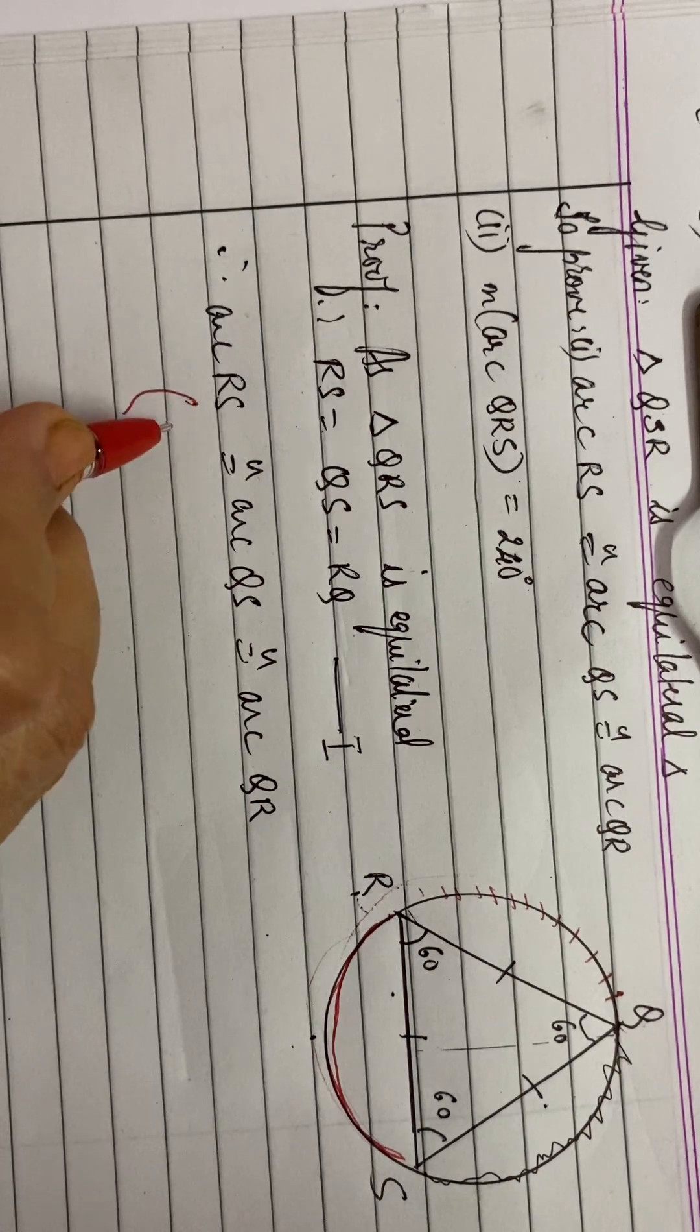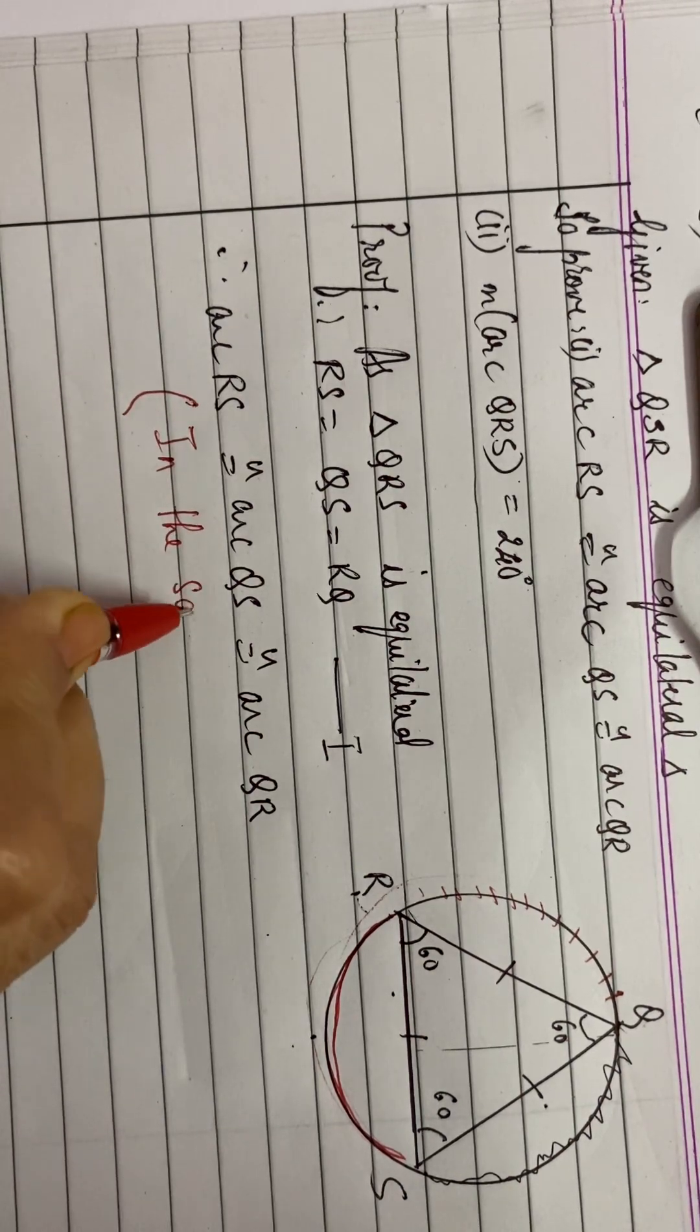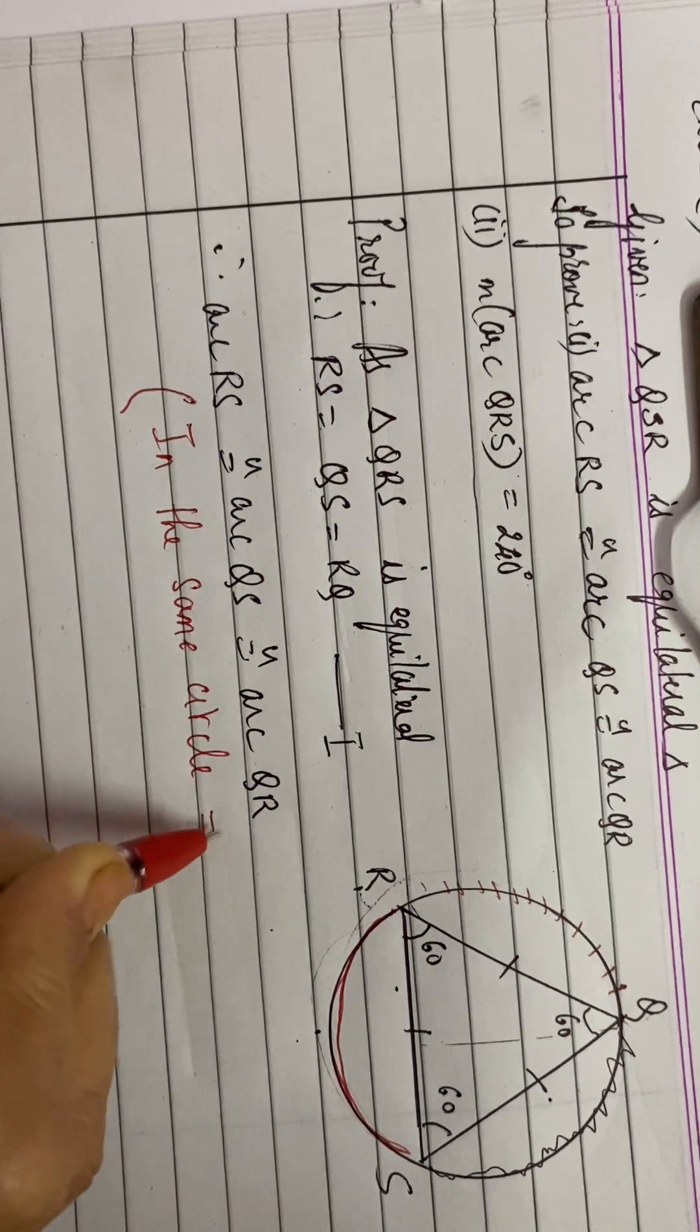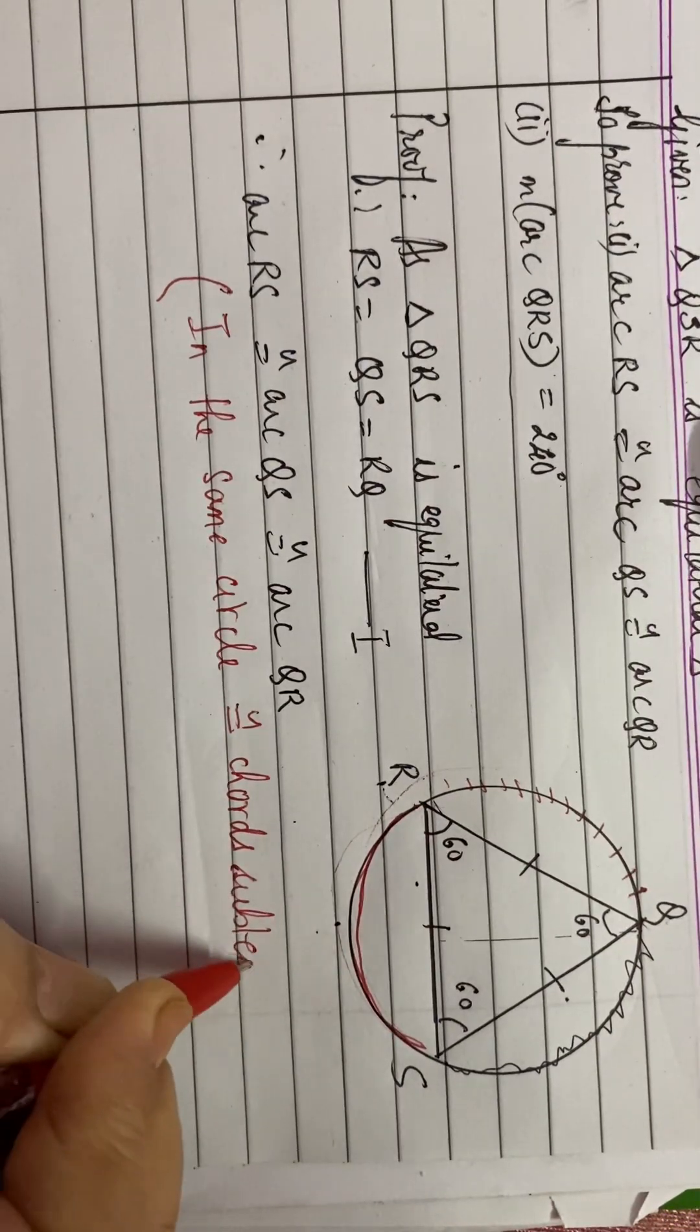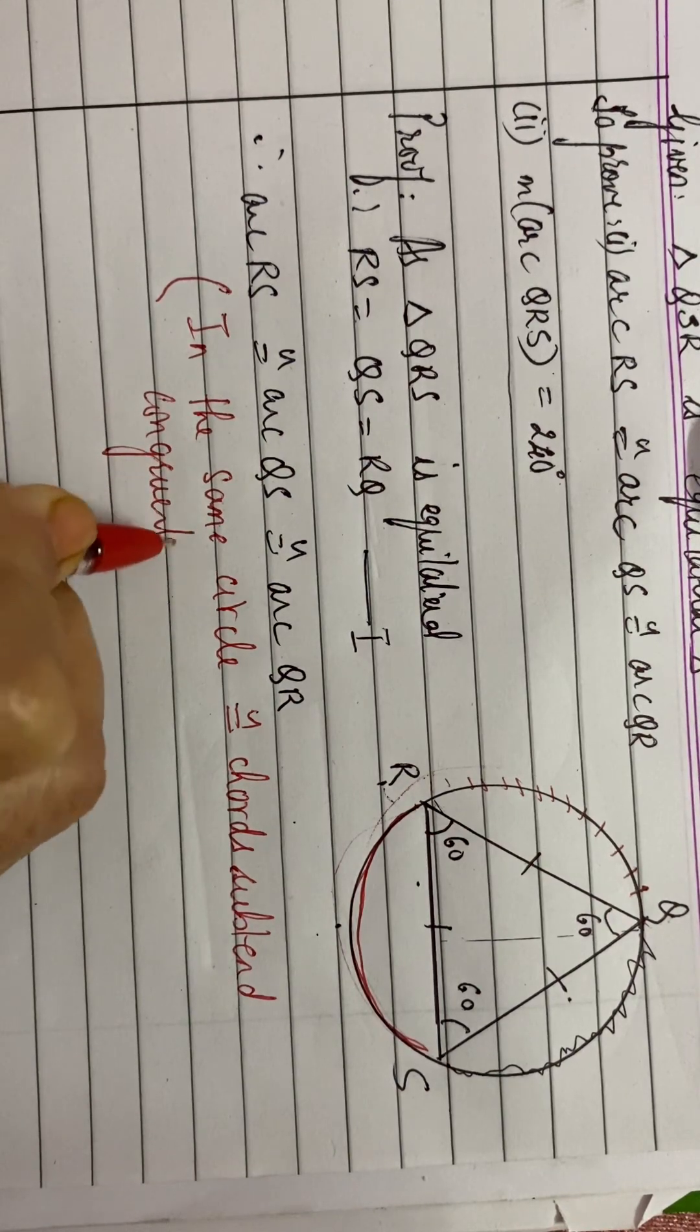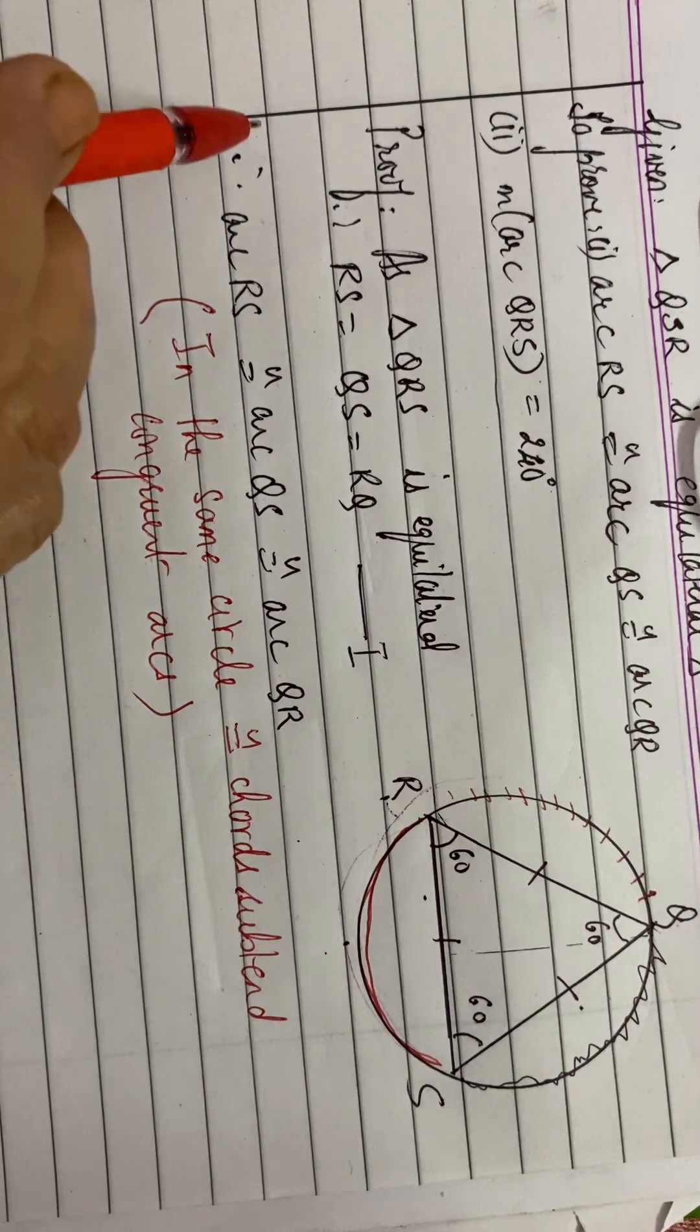Reason is, in the same circle, congruent chords subtend congruent arcs. Okay, so your first part is proved.